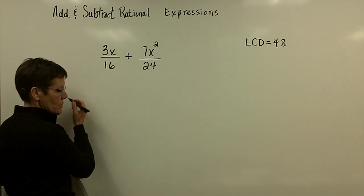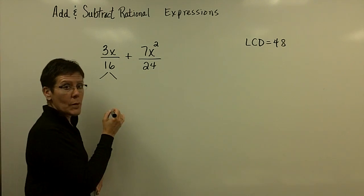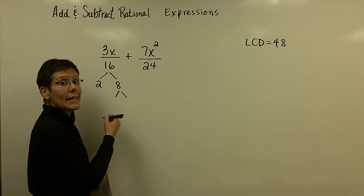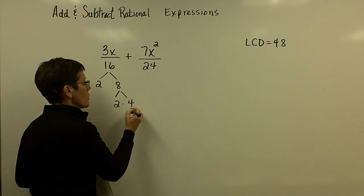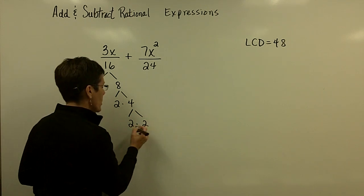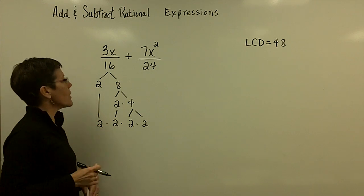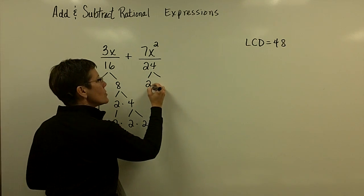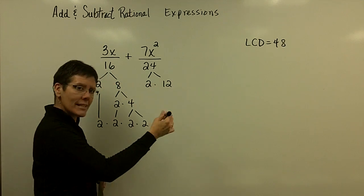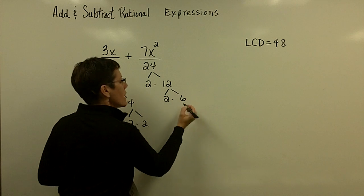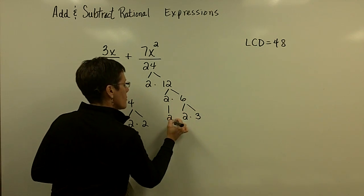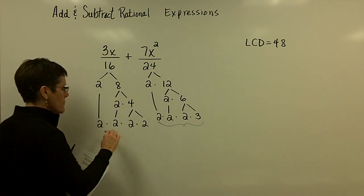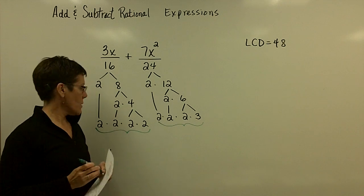When I write a number as its prime factors, I always start with 2 and ask myself: does 2 go into 16? Yes, 8 times. I keep using 2 until I can't anymore, then jump to 3. So 2 goes into 8 four times, and 2 goes into 4 twice. The factored form of 16 is 2 × 2 × 2 × 2. For 24, I go with 2 × 12 so I don't miss any prime factors. 2 goes into 12 six times, and 2 goes into 6 three times. The factored form of 24 is 2 × 2 × 2 × 3.